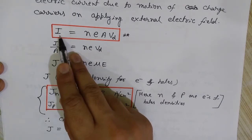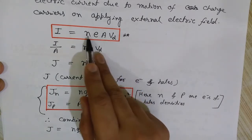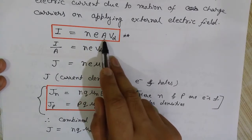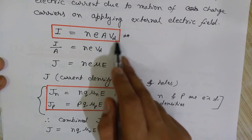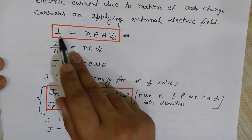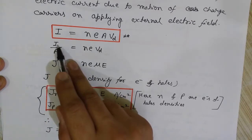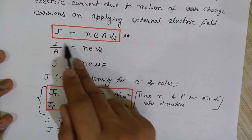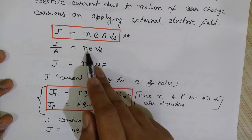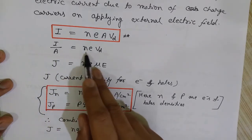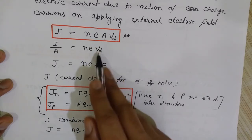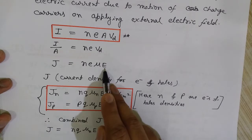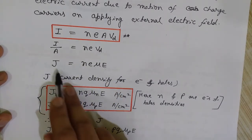The current in a semiconductor is given by I = N·E·A·Vd, where N is the density of charge carriers, E is the charge on the charge carriers, A is the cross-sectional area, and Vd is the drift velocity. Dividing I by A gives current density J, so J = N·E·Vd. Since drift velocity Vd = μ·E, we get J = N·q·μ·E, where μ is the mobility of charge carriers and E is the applied electric field.